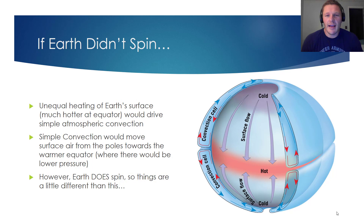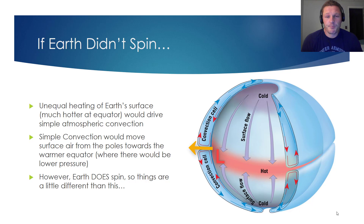Warm air tends to rise because it's less dense than its surroundings. So if we start heating up pockets of air near the surface, they will become less dense and they will rise vertically upward. Now when that happens near the equator, there will be low pressure at the surface, because if air is leaving that region, the air pressure has to decrease in that region.